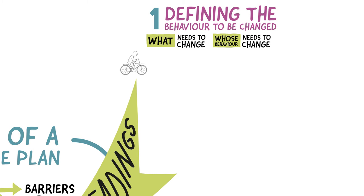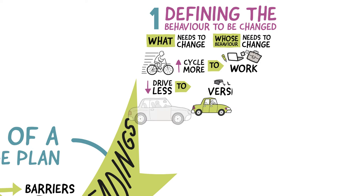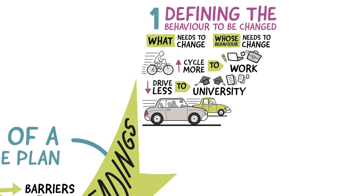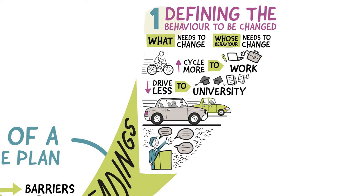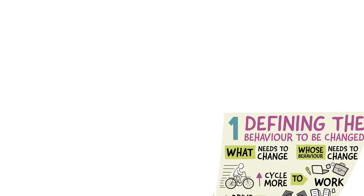For example, getting people to cycle more to work, or drive less to university. The changes should be based on recent or planned community engagement feedback, as well as local and national policy.